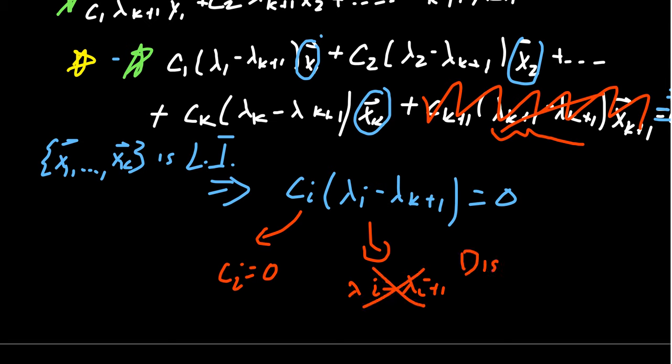So come back up to this equation right here. We had this dependence relationship on our vectors right here. It had to be that C1, C2, C K are all zero. So we get zero, zero, all the way up to this. So all of the coefficients are zero, and this would then tell us that C K plus 1 times X K plus 1 is likewise zero, because everything else went to zero.